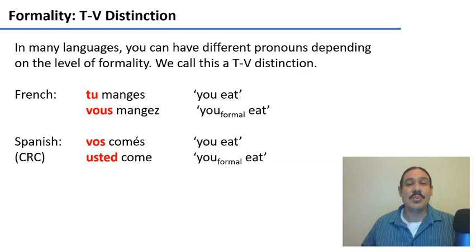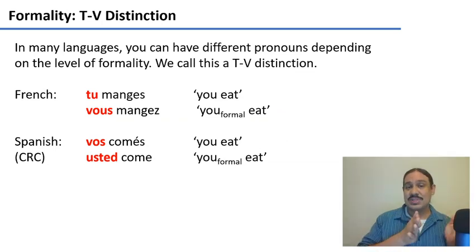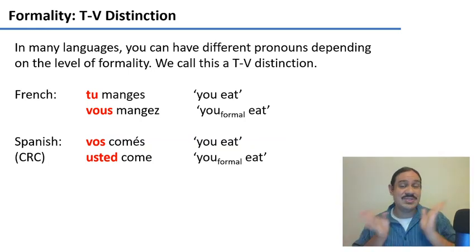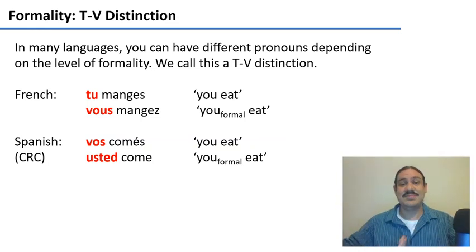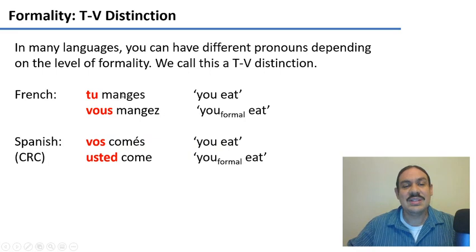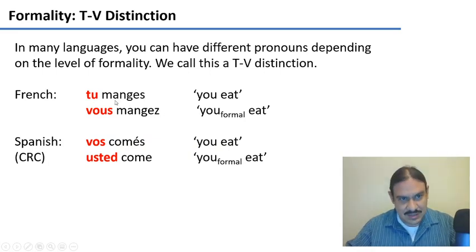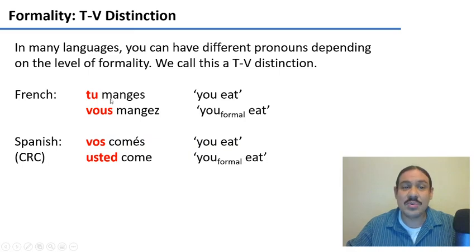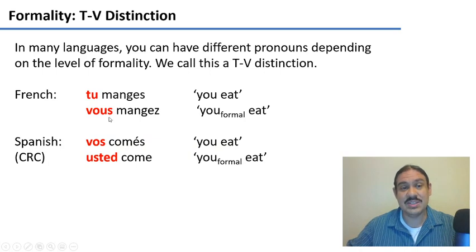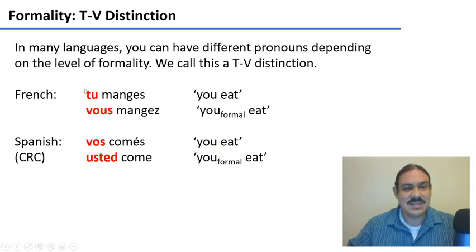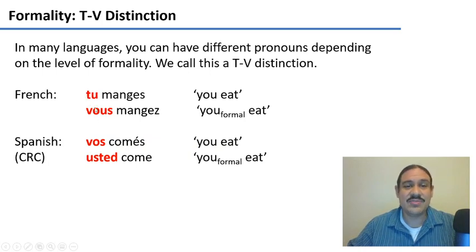Finally, let's talk about formality. In many languages, you need to distinguish between formal and informal situations, and the language changes accordingly. For example, in French these two sentences mean the same thing: 'tu manges' and 'vous mangez.' 'Tu manges' is for informal situations like with your friends, and 'vous mangez' is for formal situations like with your boss. This is called the T-V distinction, because it uses the pronouns 'tu' and 'vous' in French.